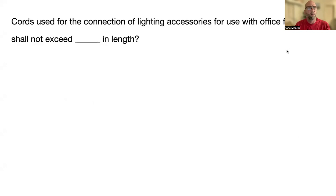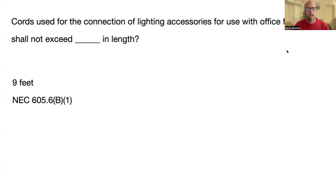First one: cords used in connection of lighting accessories for use with office furnishings shall not exceed blank in length. The answer is nine feet, and that's NEC 605.6(B)(1).